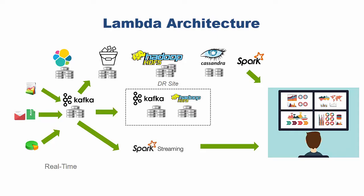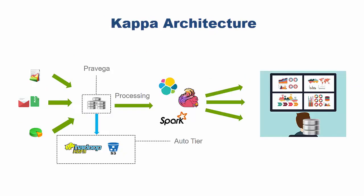One of the challenges with the Lambda architecture is that you have these two different layers, so you're supporting two levels of code. For a lot of your processing, you might just be using the real-time layer, but batch processing may only be used every month — yet you're still having to support both. That's why we talk about the Kappa architecture: it simplifies things.